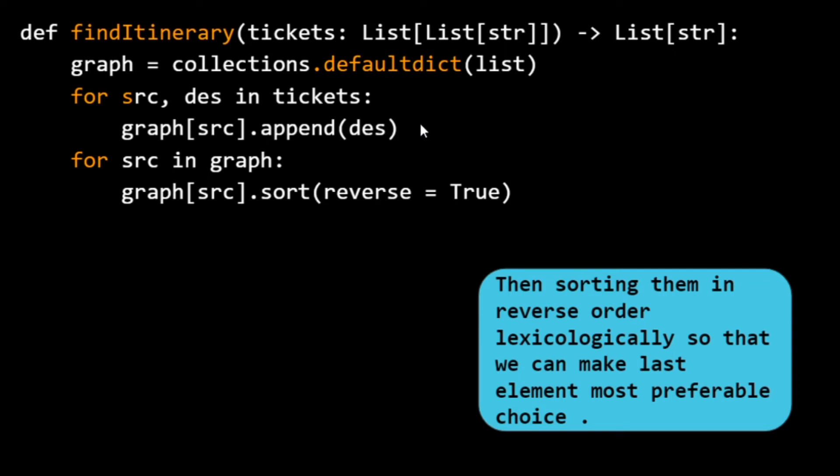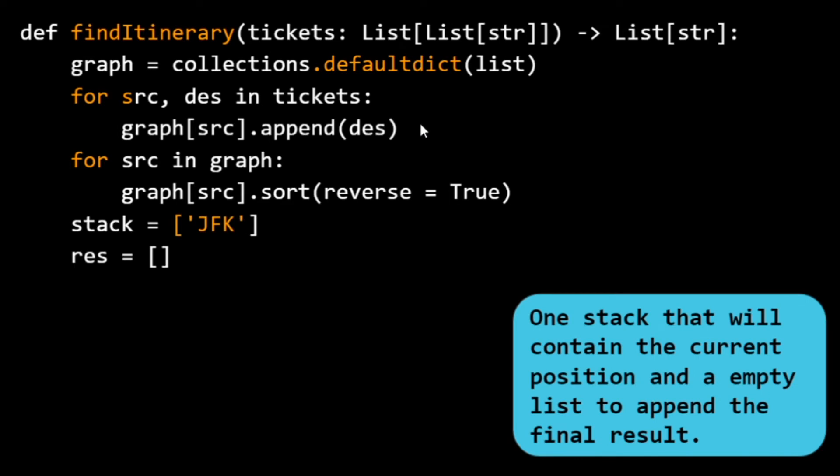I then initialize a stack with the value JFK, since that is our required starting point. The stack keeps track of where we currently are. From the current top of the stack, we can check what the next possible destinations are. The result list, called res, is where we append finalized airports.